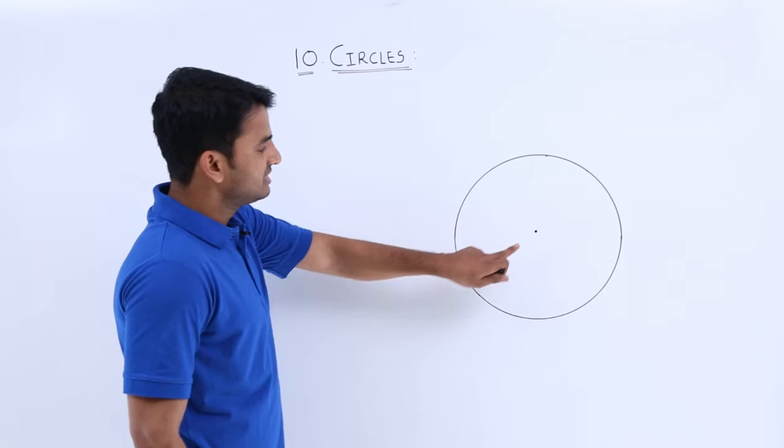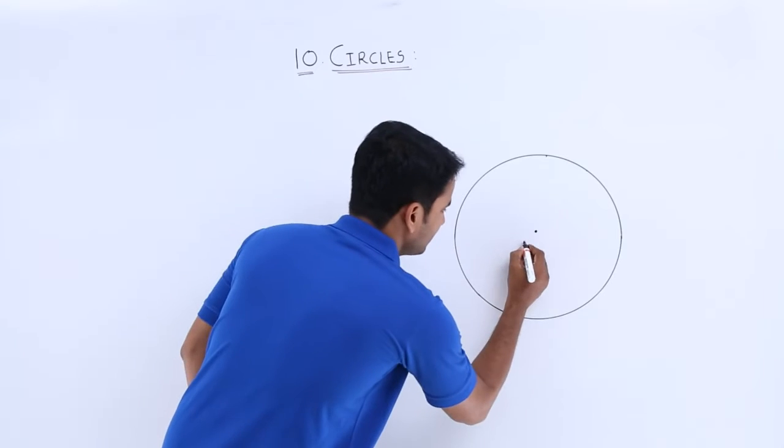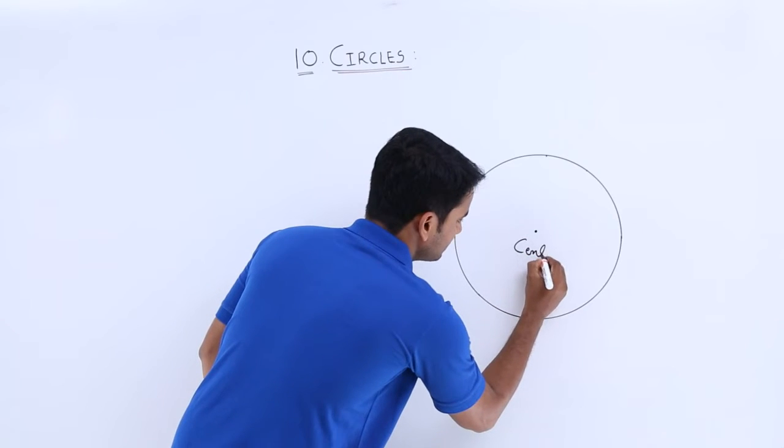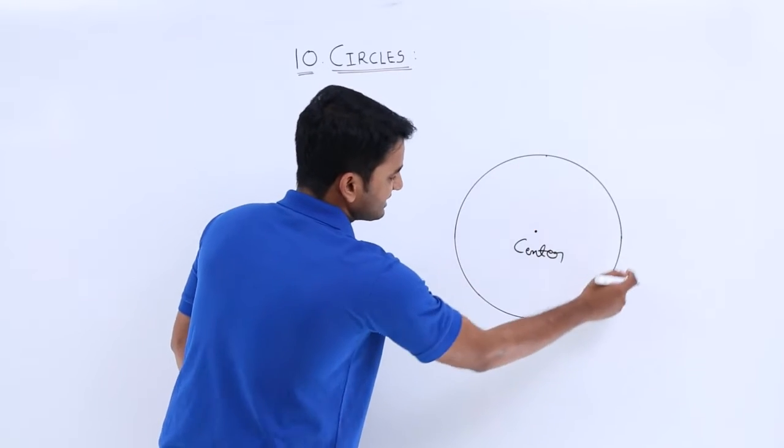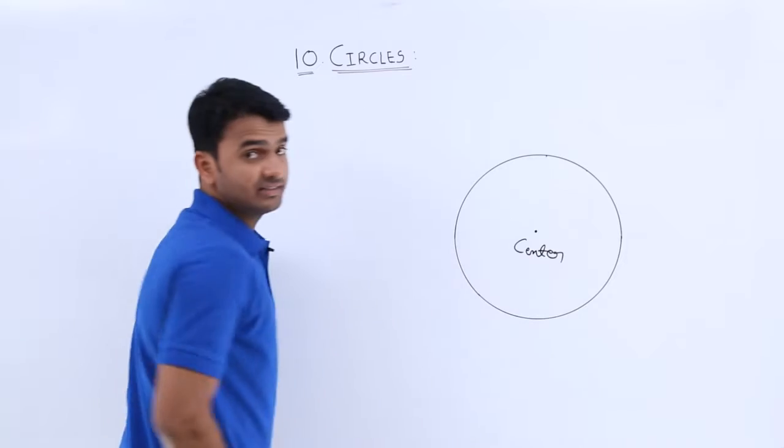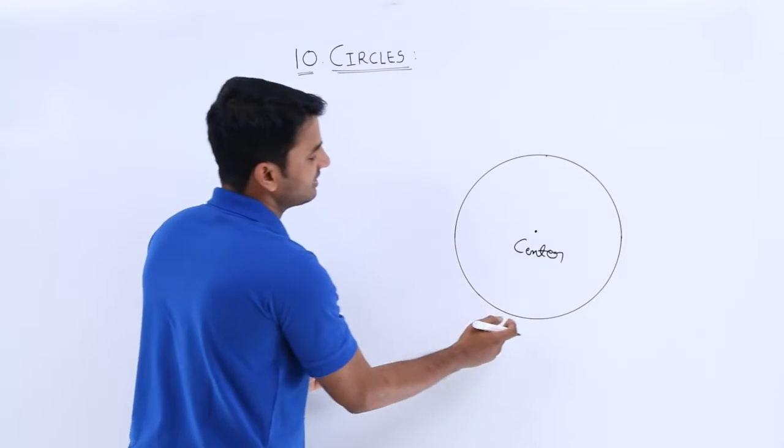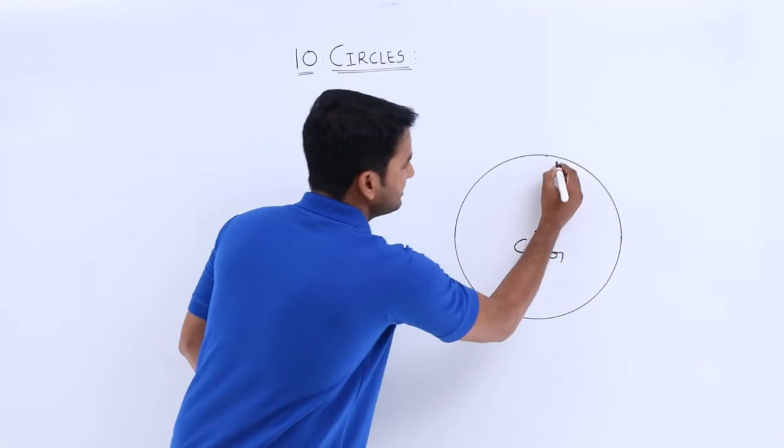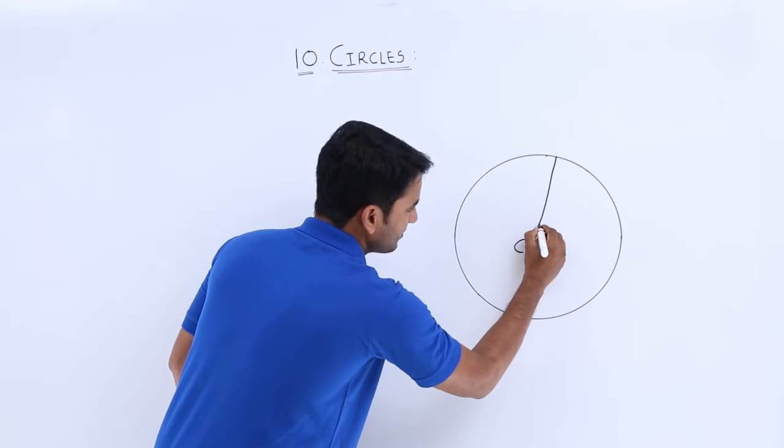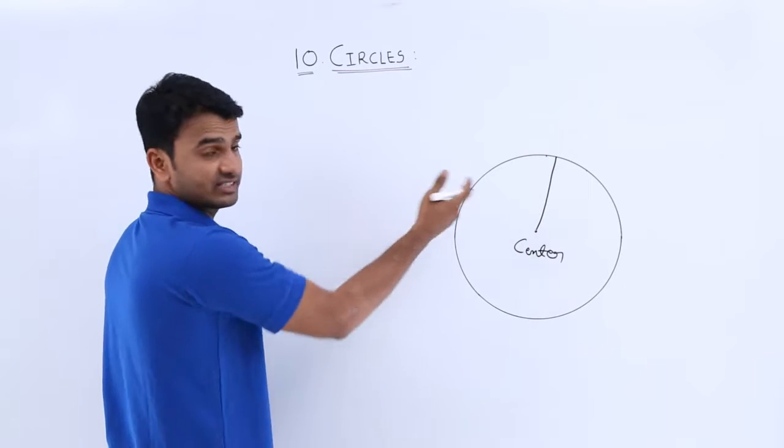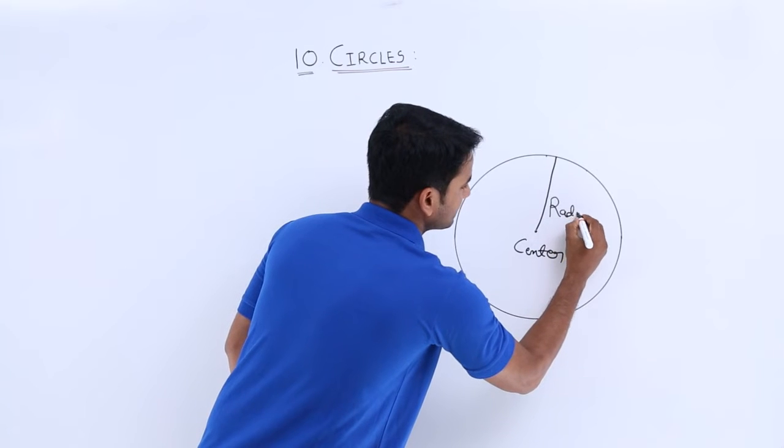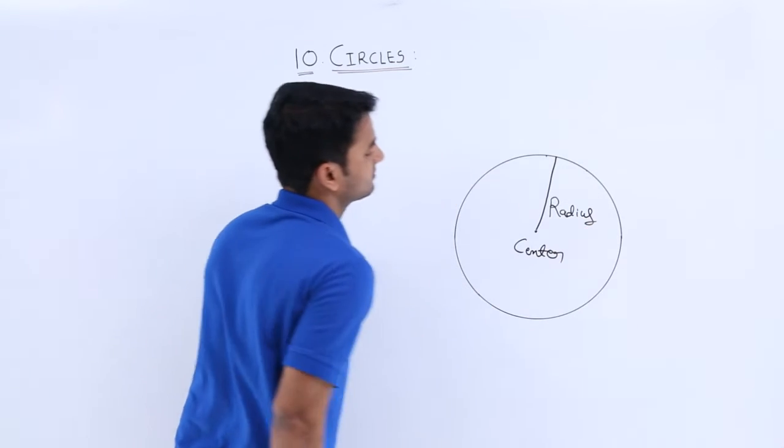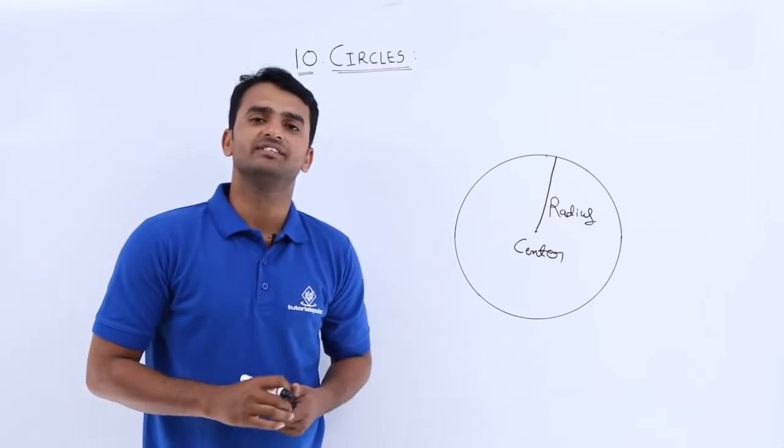Here, this point is considered as a center. This is the center. And all this collection of points, the complete perimeter of circle, is a collection of points which are at fixed distance from the center. And this fixed distance is nothing but a radius. So this is the exact definition of circle.